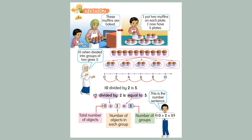Now let us look at this. 10 divided by 2 equal to 5. 10 is the total number of objects. This is the symbol for divide. And 2 means the number of objects in each group. And this is equal to. And 5 means the number of groups. And this is the number sentence.